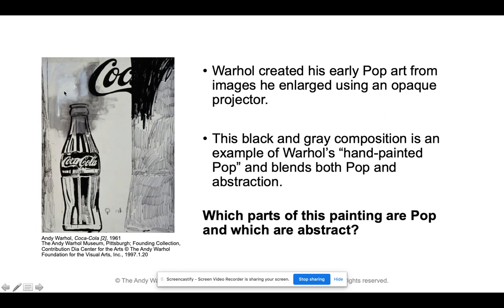This black and gray composition is an example of Warhol's hand-painted pop and blends both pop and abstraction. We have the everyday image famous in pop art — the Coca-Cola can — and then we have the abstract style, which doesn't show anything in particular but features line and movement. So it kind of combines both ideas: here's the pop art area and here is the abstract area.